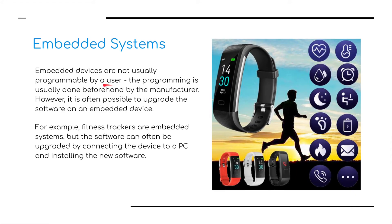Embedded devices are not usually programmed by the user. The program is usually done beforehand by the manufacturer. However, it is often possible to upgrade the software on an embedded device. For example, fitness trackers are embedded systems but the software can be upgraded by connecting the device to a PC and installing new software. Another example might be a GPS system in a car — new roads are built all the time, so generally there is an annual update and those new roads are added to your GPS device.